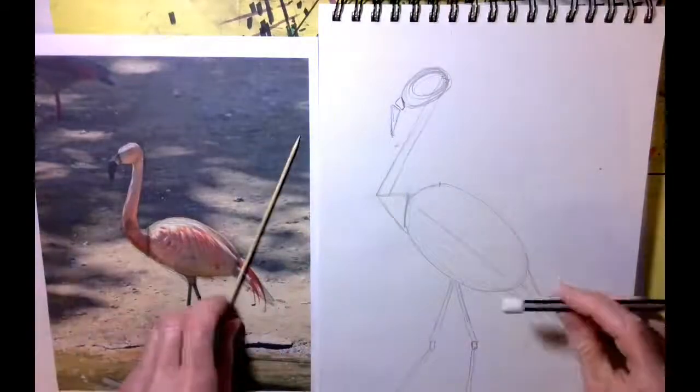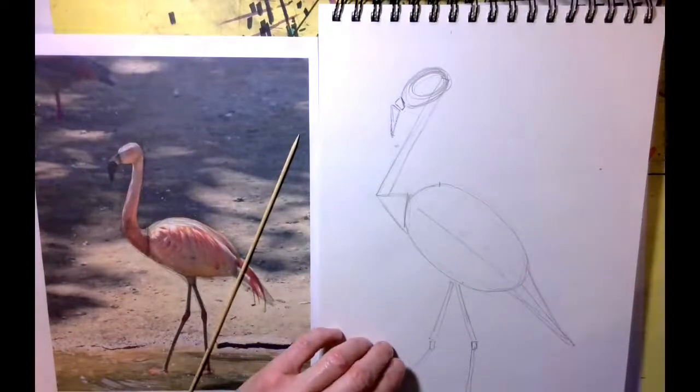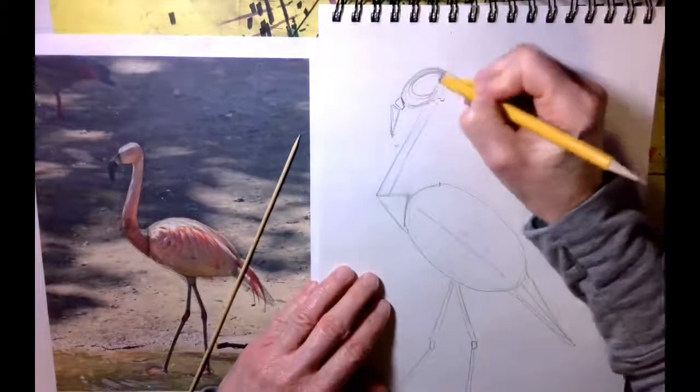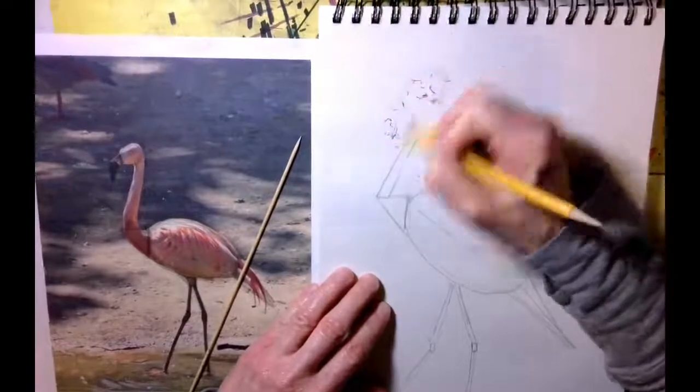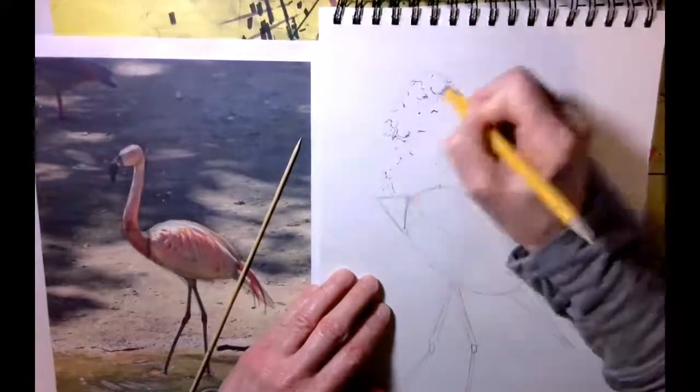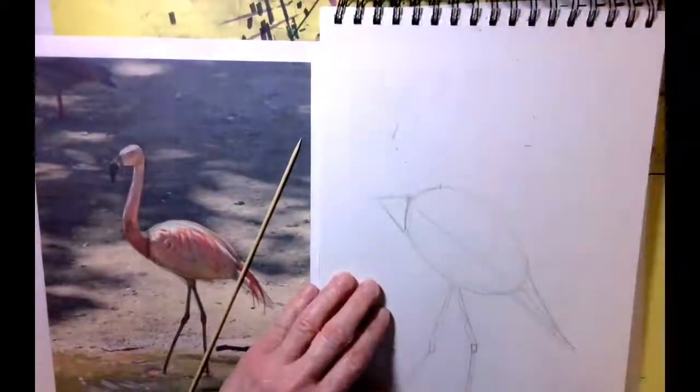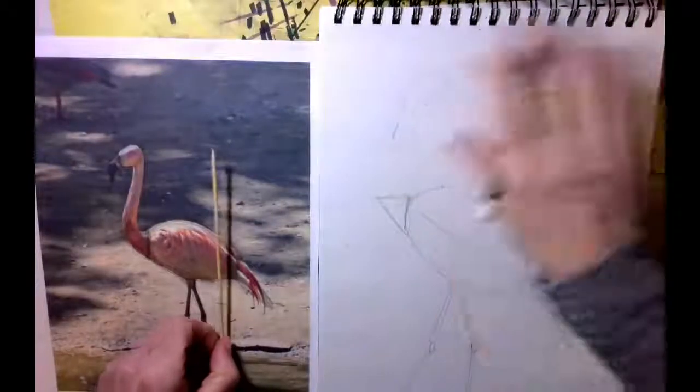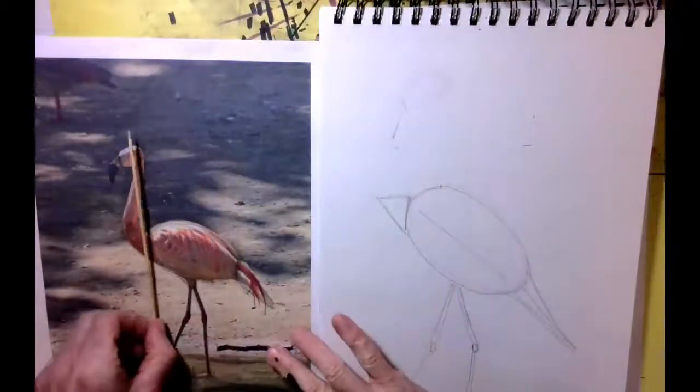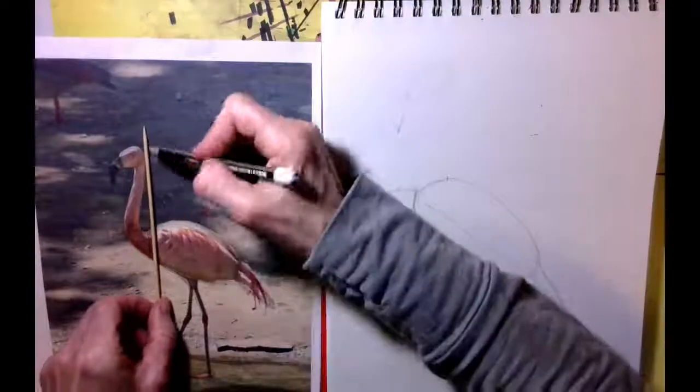So let's go ahead and fix that first. I'm actually going to erase this whole thing, and it's a good idea to do this first. You don't want to have that head all drawn, and then you've got a problem. So right now, I just have some shapes. It's easy to fix. So let's look at our reference photo.